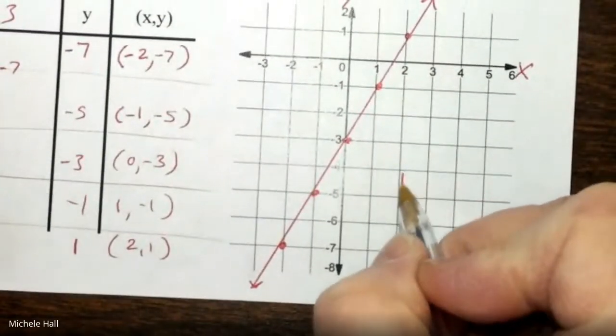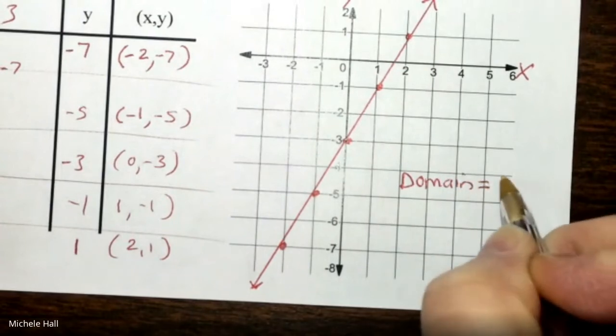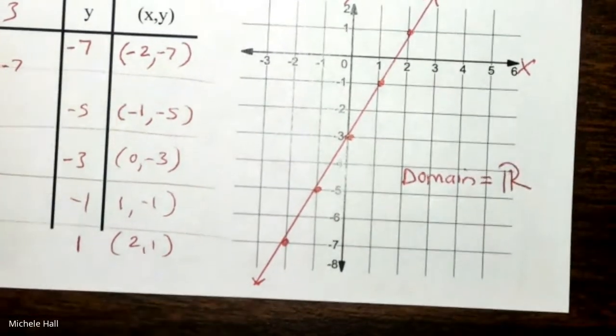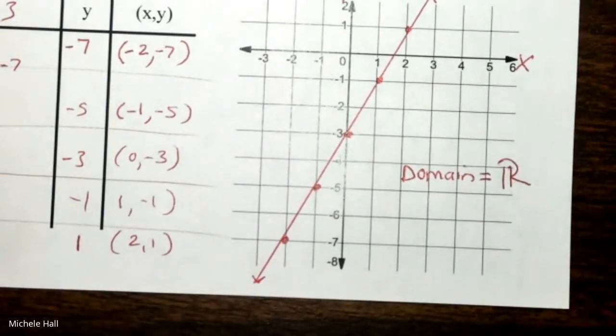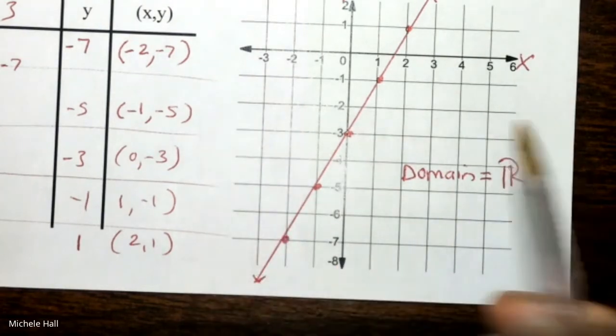So we're going to say the domain equals all the reals. That's the symbol for all the reals. Remember your real number system that we just took a test on? Whole numbers, integers, rational numbers, real numbers. It's all real numbers. The line's going to infinity all the way in the X's.